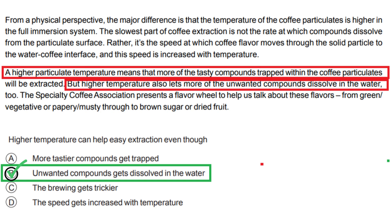Option C: The brewing gets trickier. This option is incorrect because the paragraph does not mention anything about the brewing process getting trickier. It primarily focuses on the physical differences and the effects of temperature on coffee extraction.